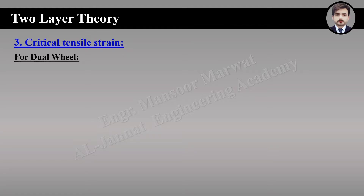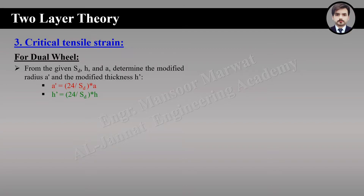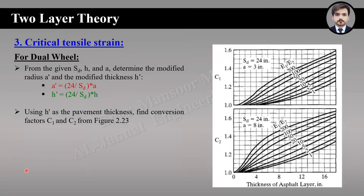For critical tensile strain for dual wheel, there is no direct method. We find a strain factor for a single wheel and multiply it by a conversion factor to get a strain factor for dual wheel. First we find the modified thickness and modified radius. The modified radius converts the dual wheel into a single wheel equivalent. The equations are: a-dash equals 24 divided by dual spacing times a, and H-dash equals 24 divided by dual spacing times H.